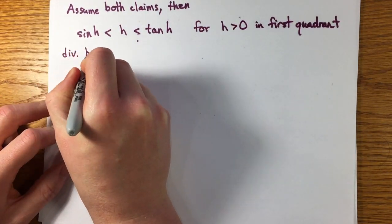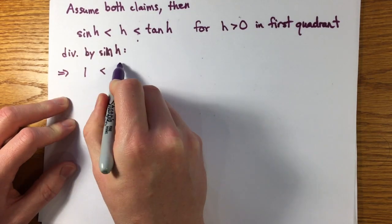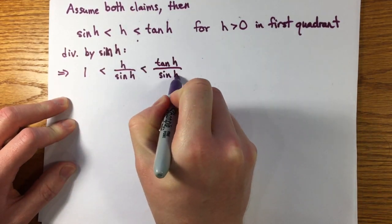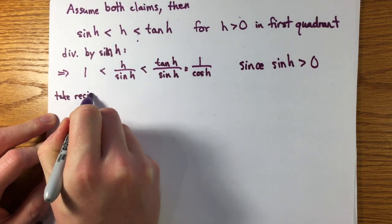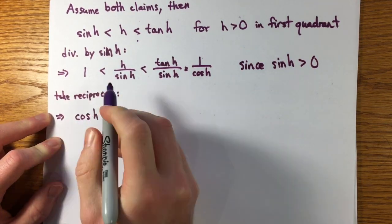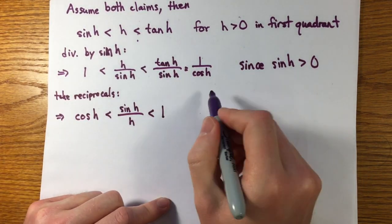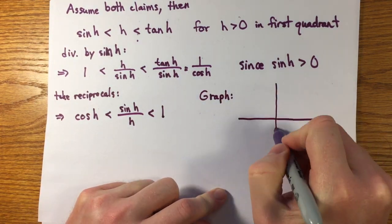If sine h is less than h is less than tangent h, for h greater than zero, then we can divide each quantity by sine of h and take reciprocals to find that the function sine h over h is bounded between two continuous functions, cosine h and 1.